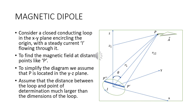Consider a closed conducting loop in the xy-plane encircling the origin with a steady current I flowing through it. To find the magnetic field at distant points like P, we simplify the diagram and assume that P is located in the yz-plane. We assume that the distance between the loop and the point of determination is much larger than the dimensions of the loop.